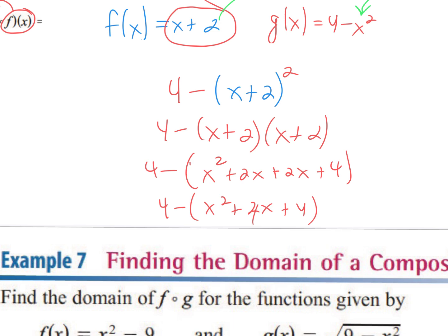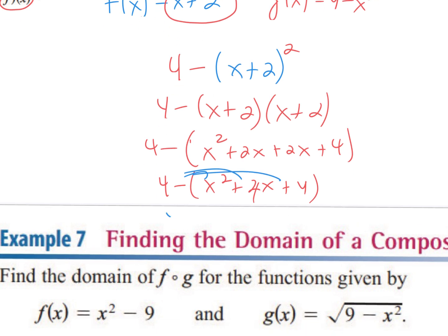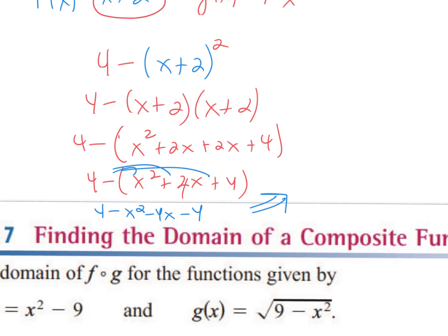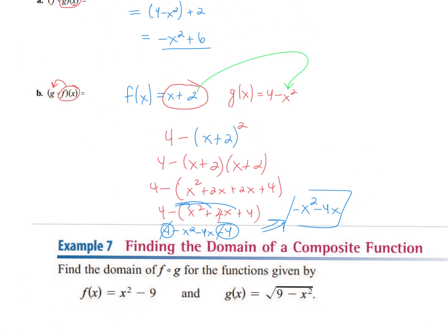Now distribute that minus sign to each term: 4 minus x squared minus 4x minus 4. Combine like terms: negative x squared minus 4x. The positive 4 and negative 4 cancel, so you're left with negative x squared minus 4x. You're just taking one and plugging it into the other.